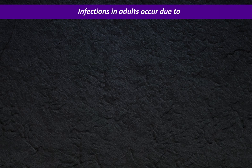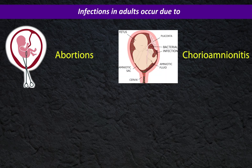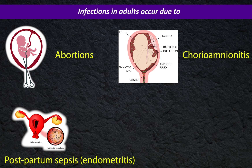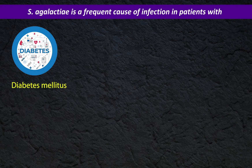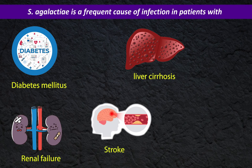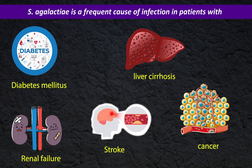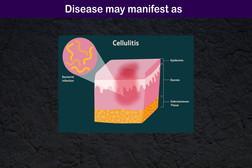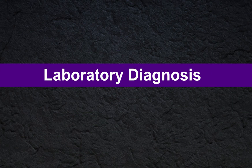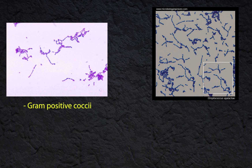Infections in adults occur due to abortions, chorioamnionitis, postpartum sepsis, endometritis, and other infections. S. agalactiae is a frequent cause of infection in patients with diabetes mellitus, liver cirrhosis, renal failure, stroke, and cancer. Disease may manifest as pneumonia, sepsis, cellulitis, arthritis, and urinary tract infections.